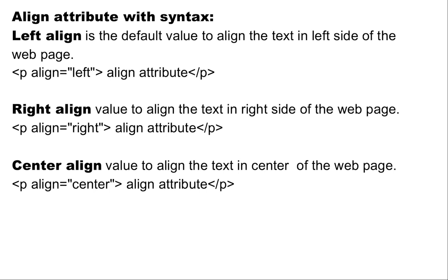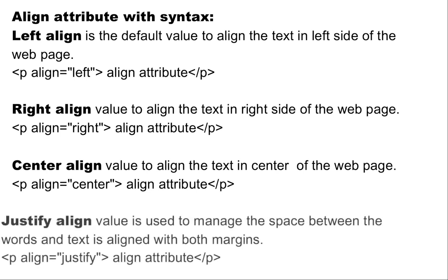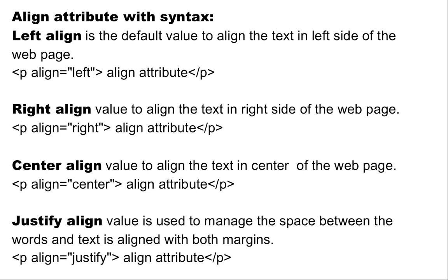Next is center align. Center align value is used to align the text in the center of the webpage. Syntax: open the p tag, then 'align' is the attribute name and 'center' is the value, then some content, and close the p tag. Next is justify align. Justify align value is used to manage the space between the words, and text is aligned with both margins.